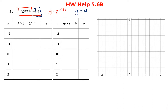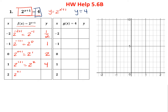Let's start with f of x equals 2 to the x plus 1. Plugging in x equals minus 2: minus 2 plus 1 is minus 1, so the value is 1 half. For x equals minus 1: minus 1 plus 1 is 0, and any number to the 0 power is 1. Then 2 to the 0 plus 1 is 2 to the 1, or 2. 2 to the 1 plus 1 is 2 squared, or 4. And 2 to the 2 plus 1 is 2 cubed, or 8.